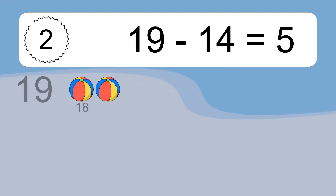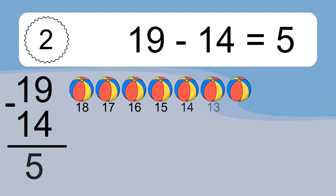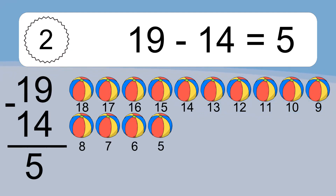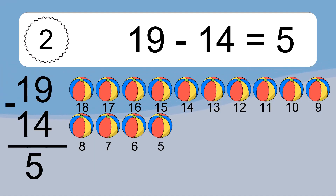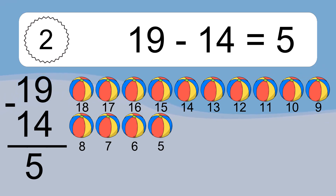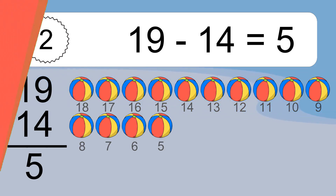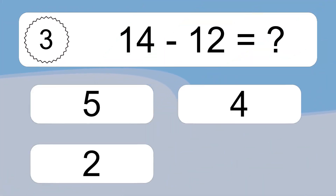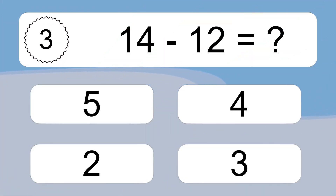19 minus 14 equals what? 19 minus 14 equals 5. Let's count it! 18, 17, 16, 15, 14, 13, 12, 11, 10, 9, 8, 7, 6, 5.